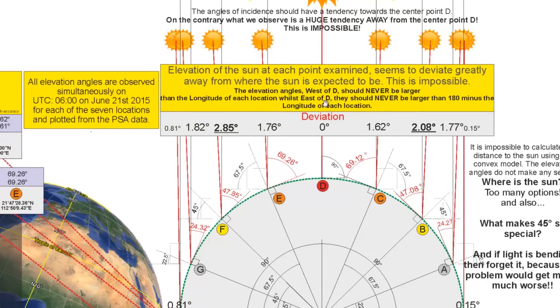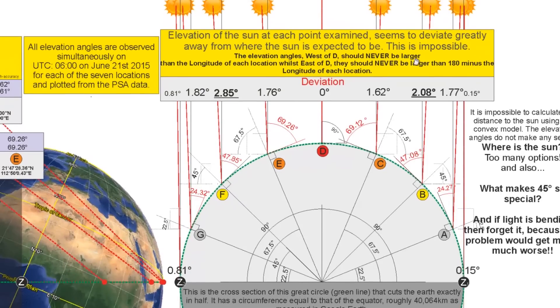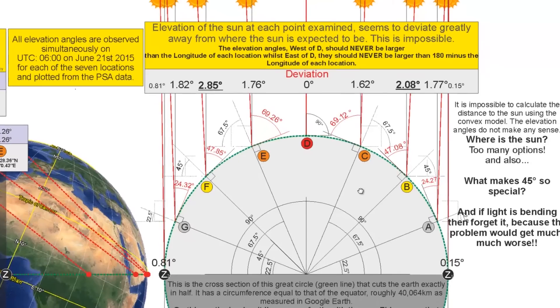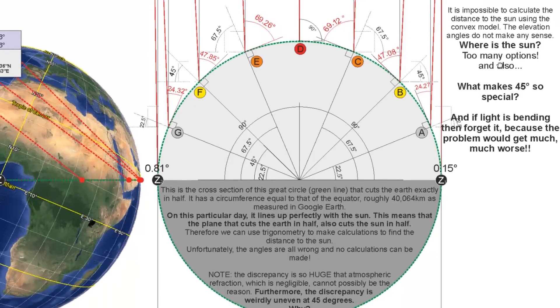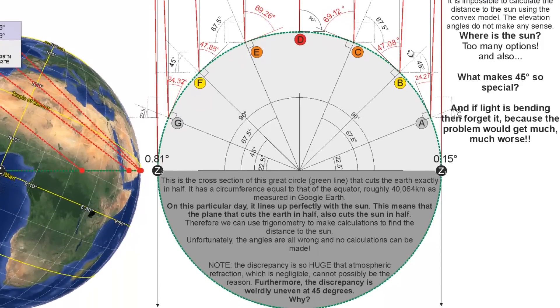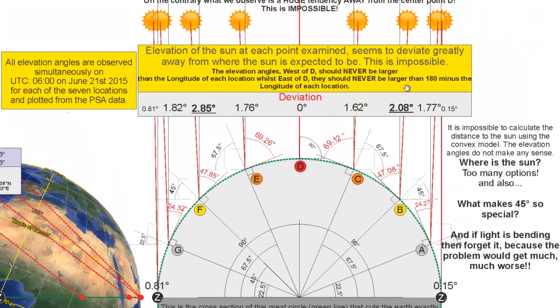Elevation of the Sun at each point examined seems to deviate greatly away from where the Sun is expected to be. The elevation angles west of D should never be larger than the longitude of each location. Whilst east of D, they should never be larger than 180 minus the longitude of each location. It is impossible to calculate the distance to the Sun using the convex model. The elevation angles do not make any sense. Where is the Sun? We have too many options. And also, what makes 45 degrees so special? We see that the deviation from the normal seems to increase towards 45 degrees, and then the deviation seems to decrease as we get towards 90 degrees. And the same happens on the other side of the globe.